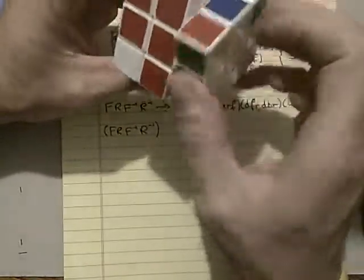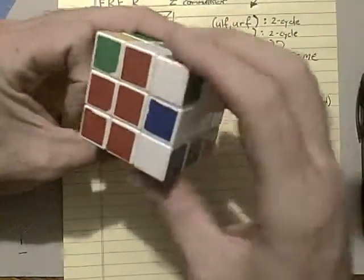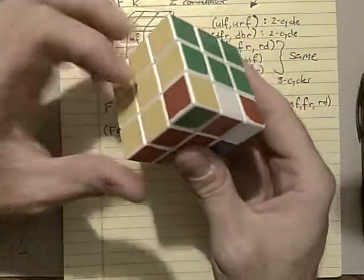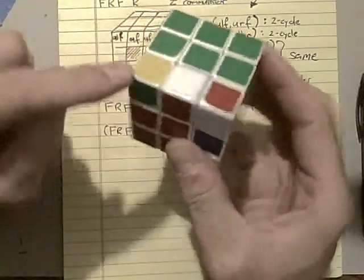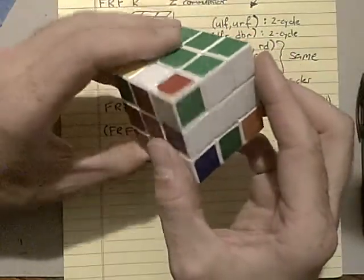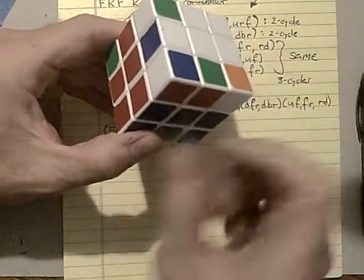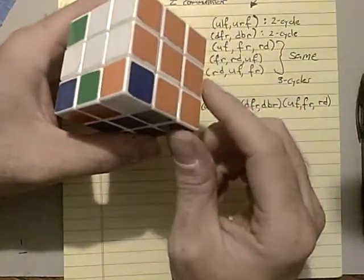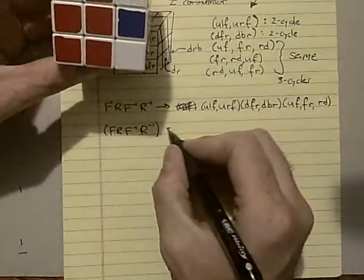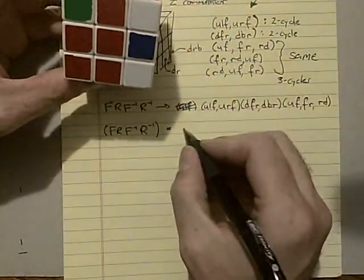So if I do it again, F, R, F prime, R prime, you can see that this corner is where it belongs, this corner is where it belongs, this corner is where it belongs, and this corner is where it belongs. So it gives you a twist.